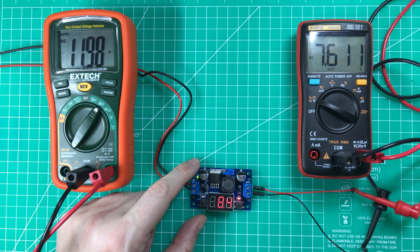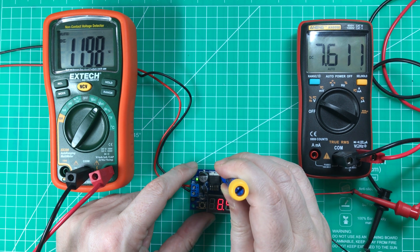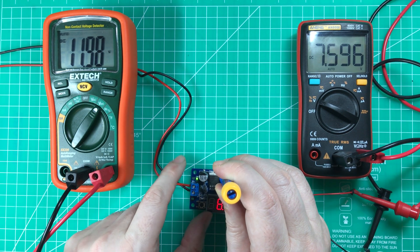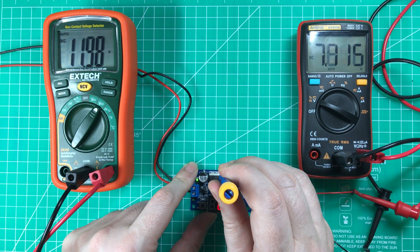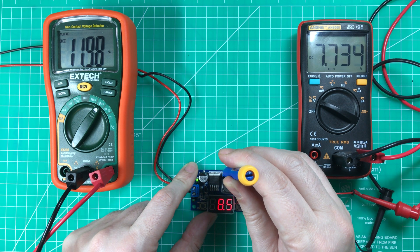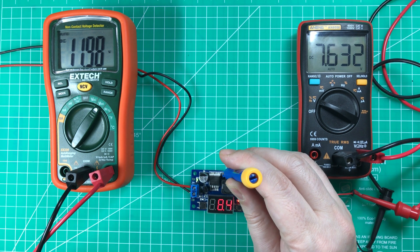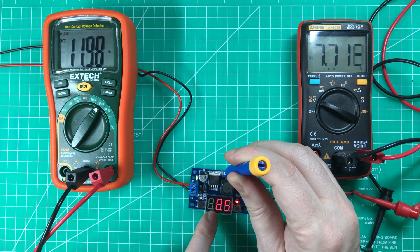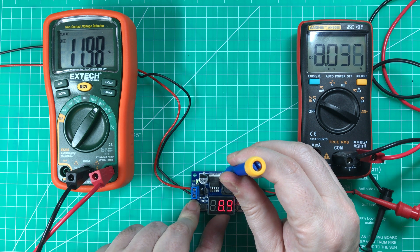Essentially what happens is you can change this potentiometer here, this trim pot, and if you watch this meter on the output you can see that by turning it clockwise I'm increasing the voltage, by turning it anticlockwise I'm decreasing the voltage. But hopefully you can see that as this goes up, it's not going up to meet the indicated value here. This value is also going up.